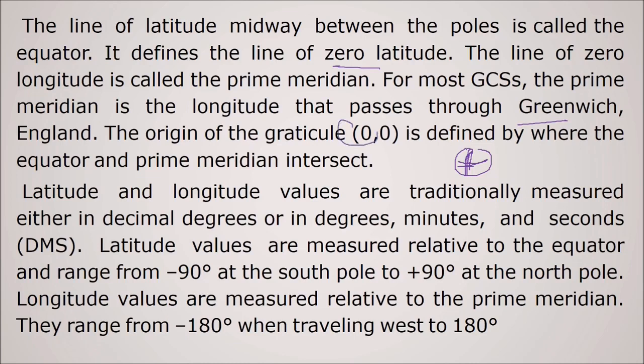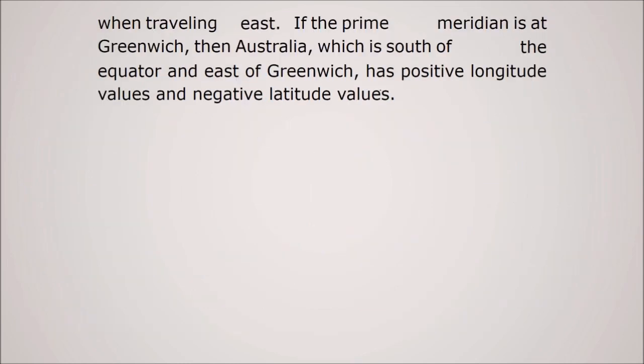The line of zero longitude is called the prime meridian which is specific for the world. And for most of these years the prime meridian is the longitude that passes through Greenwich, England. The origin of the graticule here is zero zero. It's defined by where the equator and the prime meridian intersect. The latitude and longitude values are traditionally measured either in the decimal degrees or DMS degree minute second. The latitude values are measured related to the equator that ranges from minus 90 degrees south to plus 90 degrees to the north pole. And longitude, these angles are measured related to the prime meridian. They range from minus 180 degrees to plus 180 degrees. So it covers 360 degrees. This covers around 180 degrees. If the prime meridian is at Greenwich, Australia which is south of the equator and east of Greenwich has positive longitude values and negative latitude values. I am giving you an example.